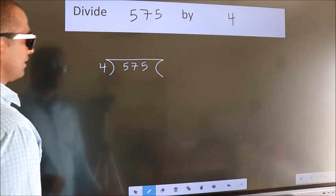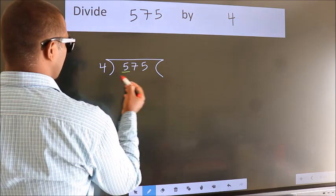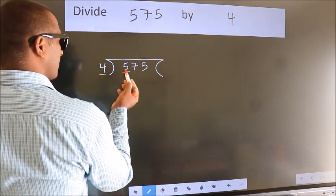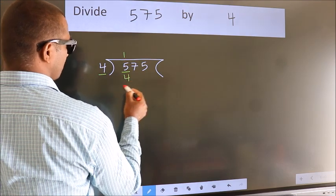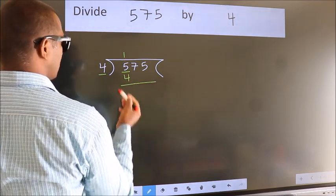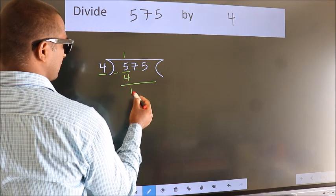Next, here we have 5, here 4. A number close to 5 in the 4 table is 4, one times 4. Now we should subtract. We get 1.